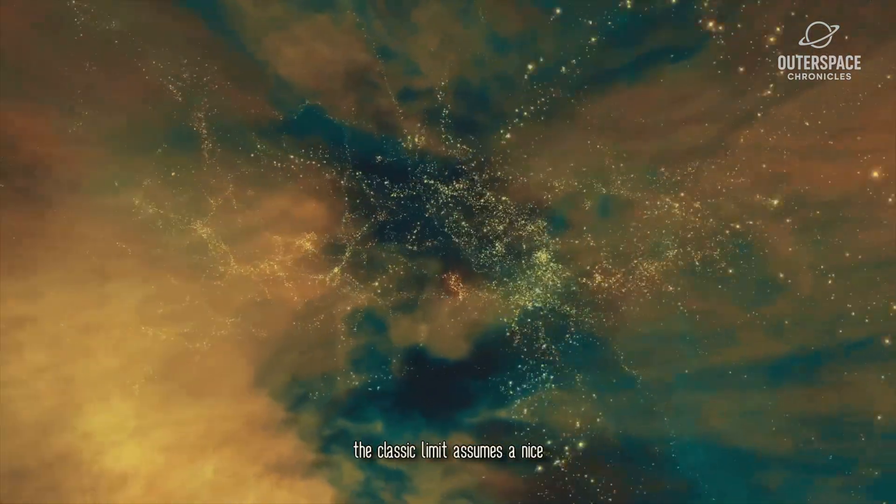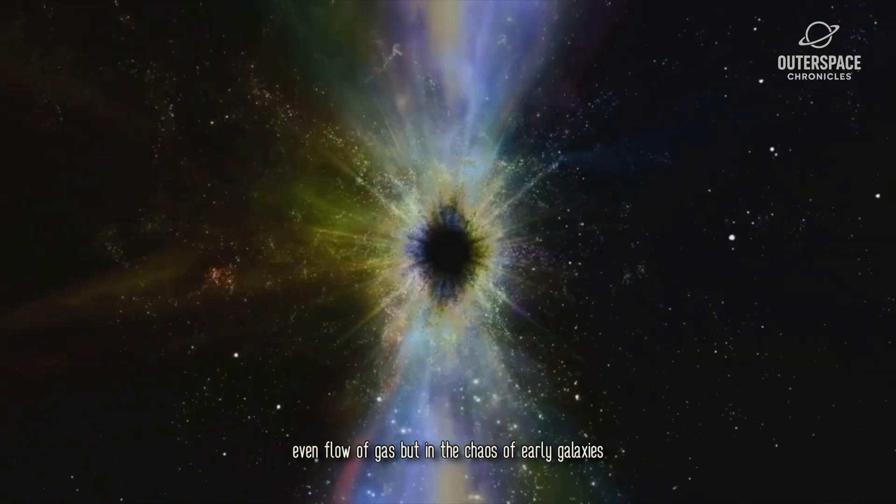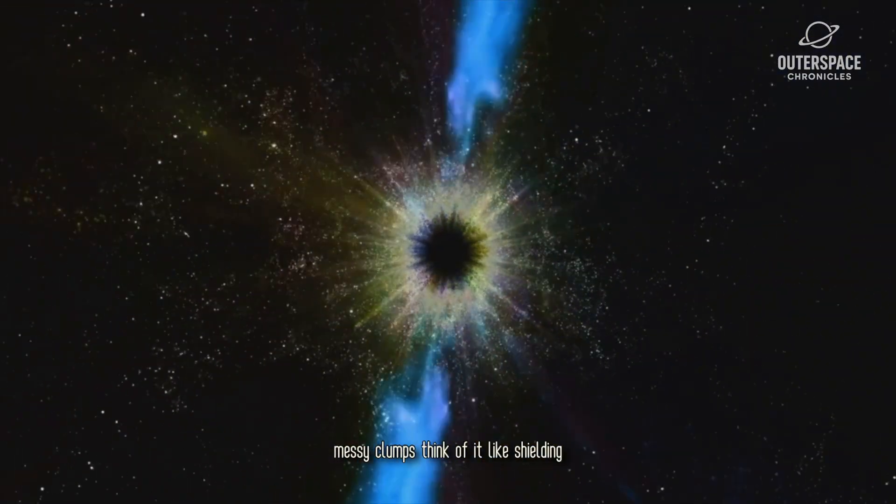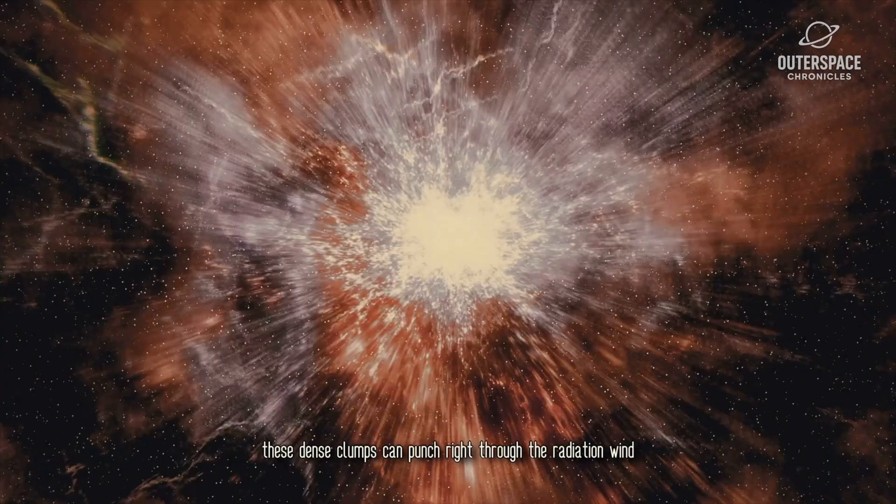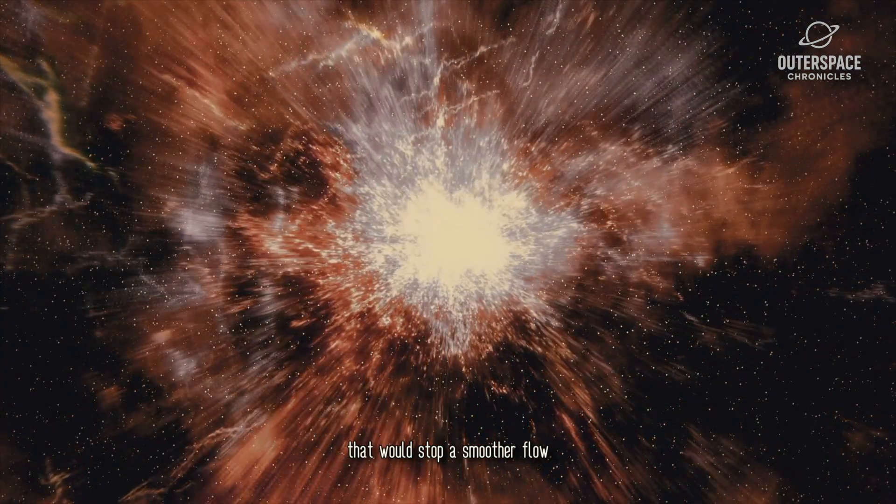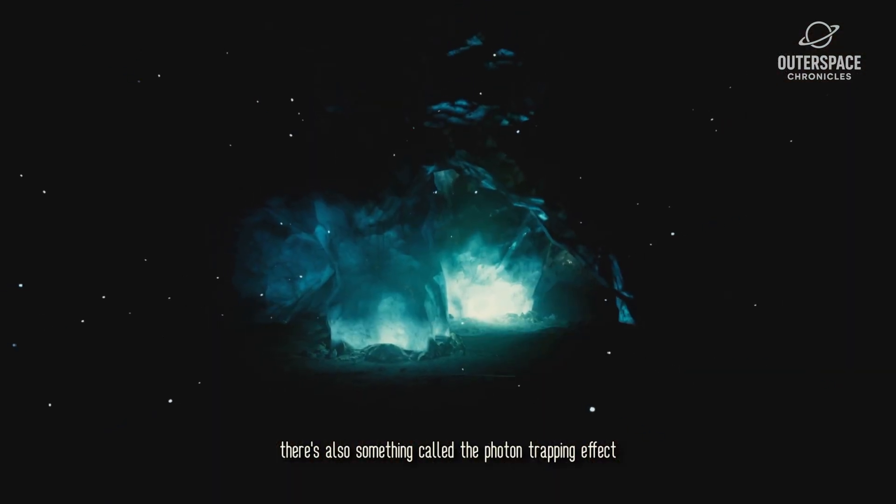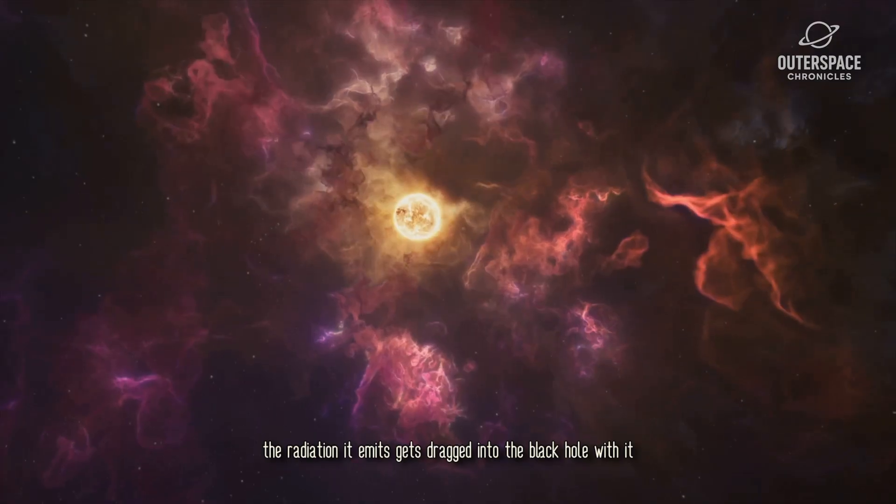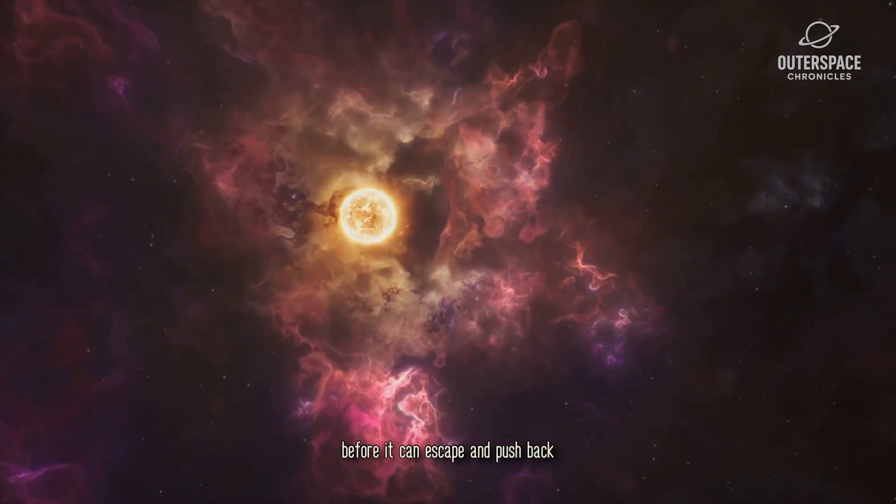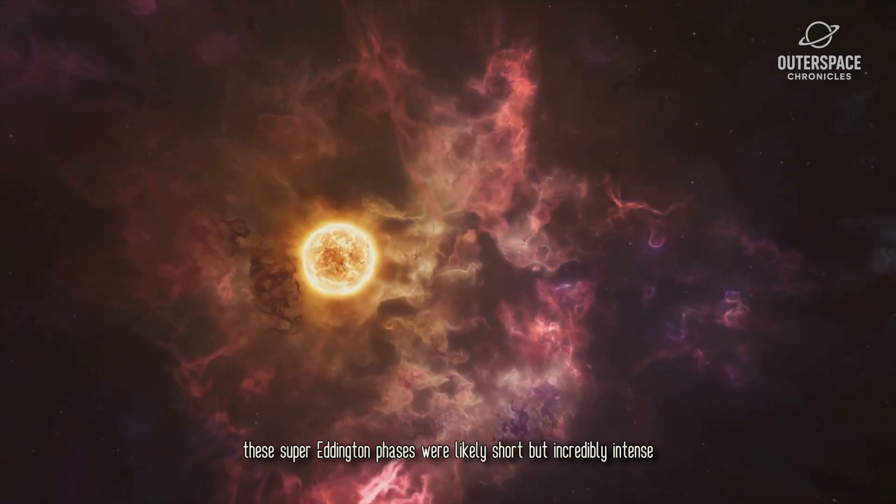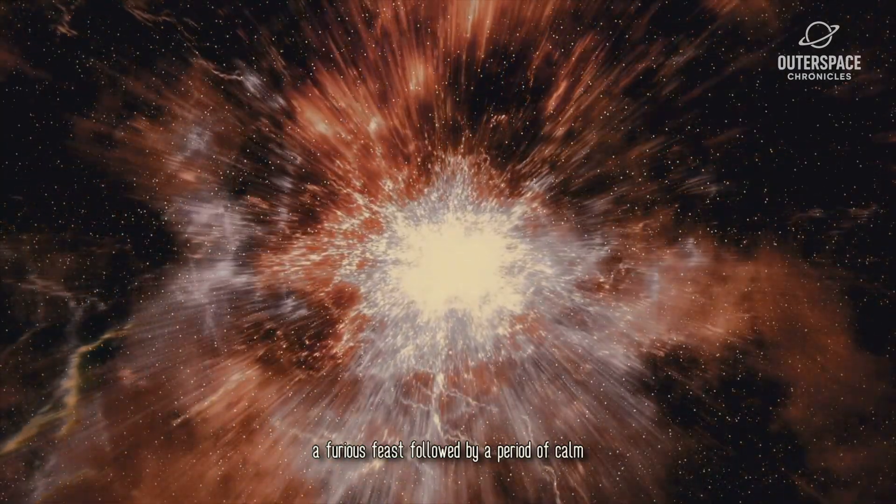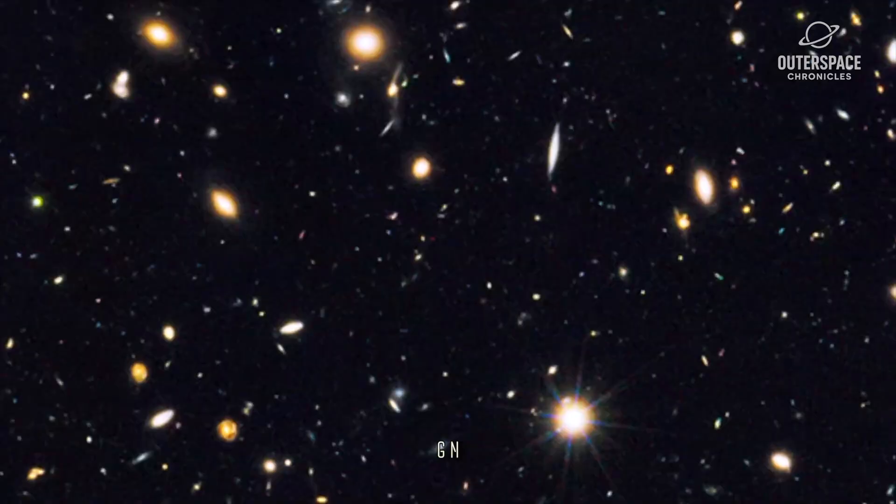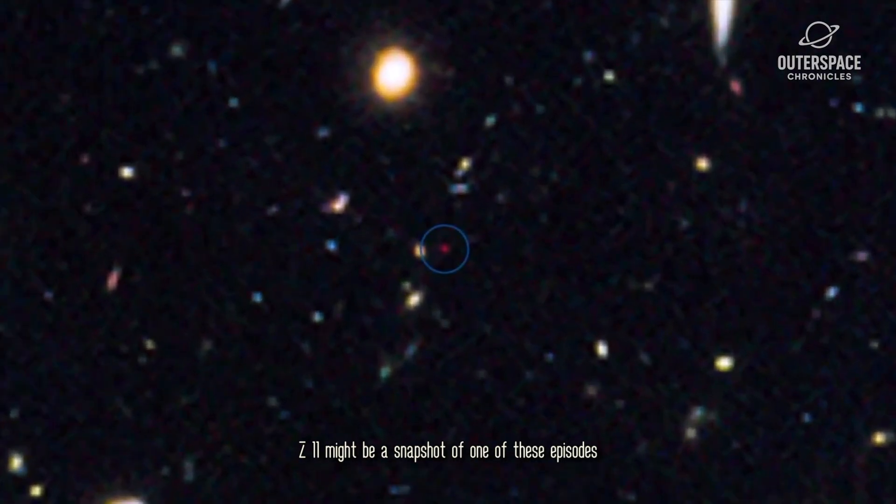Current theories suggest it's all about how it gets its food. The classic limit assumes a nice, even flow of gas. But in the chaos of early galaxies, matter might fall in as dense, messy clumps. Think of it like shielding. These dense clumps can punch right through the radiation wind that would stop a smoother flow. There's also something called the photon trapping effect, where if matter falls in fast enough, the radiation it emits gets dragged into the black hole with it before it can escape and push back. These super-Eddington phases were likely short but incredibly intense, a furious feast followed by a period of calm after the black hole's own winds blow away the leftovers. GNZ11 might be a snapshot of one of these episodes, a key piece of the puzzle.